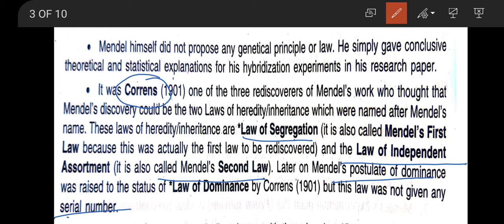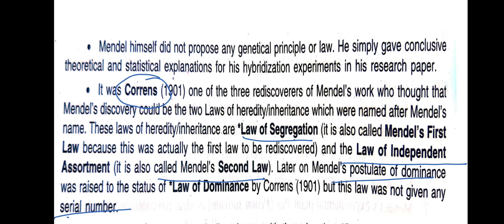In simple terms, there are three Mendel's laws of inheritance: law of dominance, law of segregation, and law of independent assortment. Law of dominance and law of segregation are based on the monohybrid cross, while the law of independent assortment is based on the dihybrid cross. Law of segregation is also called Mendel's first law, and law of independent assortment is also called Mendel's second law of inheritance.